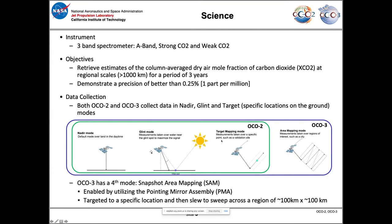On OCO-2 you can reorient the spacecraft to point to different locations. On OCO-3 we cannot reorient the space station, so OCO-3 has a two-axis component called the Pointing Mirror Assembly (PMA) that allows data collection in the three modes. Additionally, because the PMA provides more flexibility, OCO-3 has a fourth mode called Area Mapping Mode, which targets a specific location and slews to sweep across a 100 km by 100 km region.